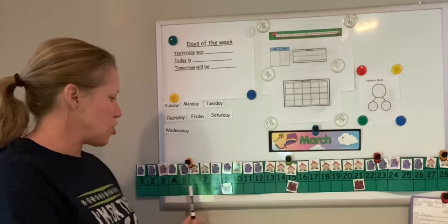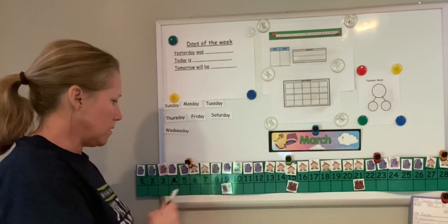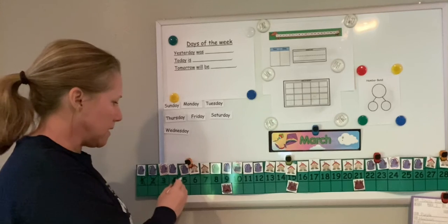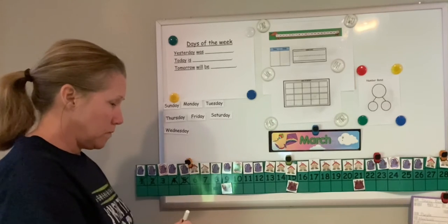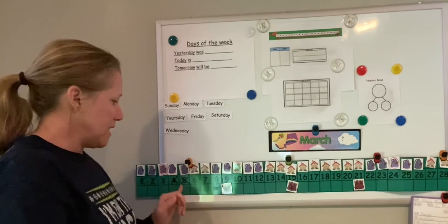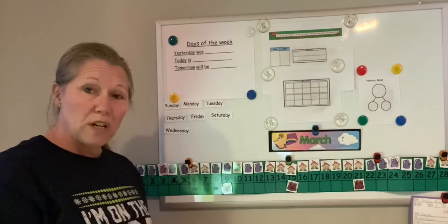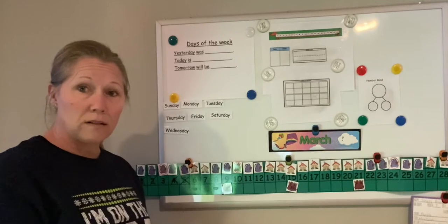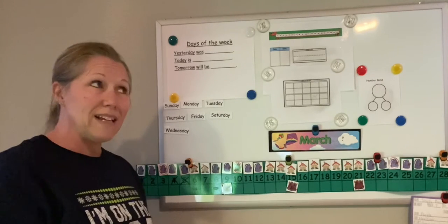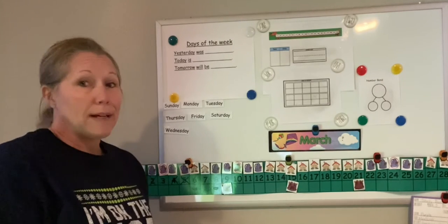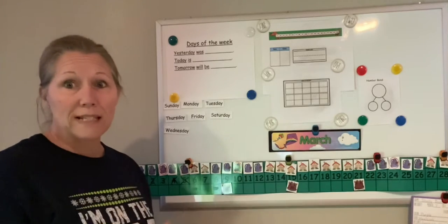Today is March Fifth. So let's put an X on there. And is five a lonely number or a number pair? That's right, it's a lonely number. It's all by itself.